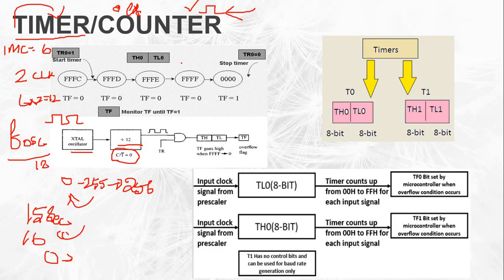With the timer, internal pulses go through machine cycles, each machine cycle having different T-states with about 2 clock pulses each, giving a total of 12 clock pulses per machine cycle. That is the oscillator frequency divided by 12, and the timer increments. The counter, on the other hand, counts external pulse signals.